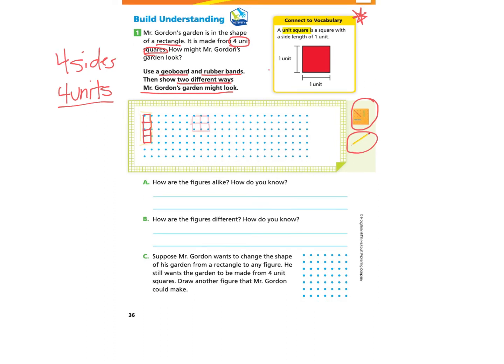Another way shown is making two unit squares next to each other and two underneath that would still have four sides and be made with four units. Now we can take a look at questions A, B, and C. Question A states: how are the figures alike and how do you know? When I take a look at both figures, I can count that there are four units in each figure. So that is how I know the figures are alike, because they both have four units and I counted them.